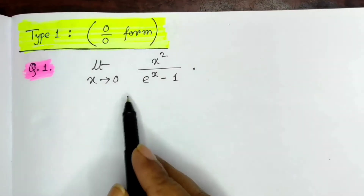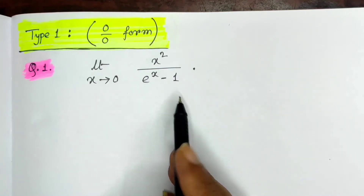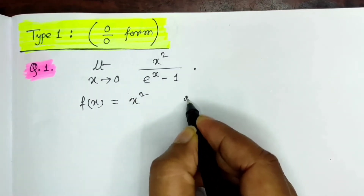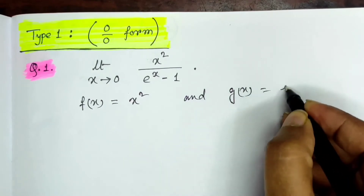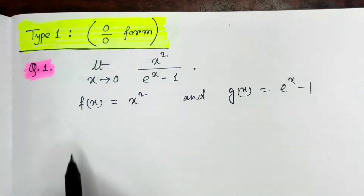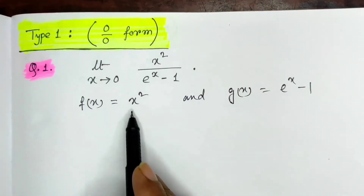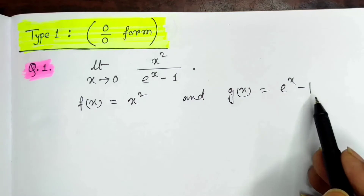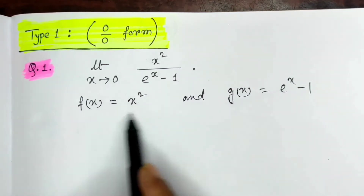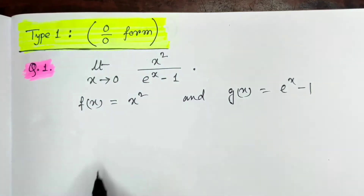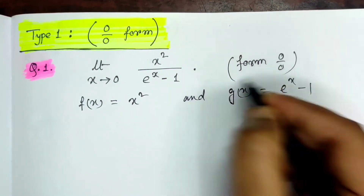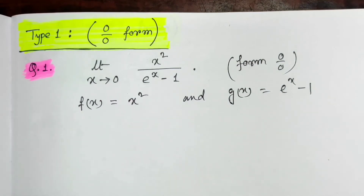In the first example, the given limit is x² divided by e^x − 1. Let f(x) = x² and g(x) = e^x − 1. If we consider limit x tends to 0, then f(x) = 0. Similarly, e^0 = 1 and 1 − 1 = 0, so g(x) = 0 at x = 0. Therefore the given limit is in the form of 0 by 0, which is the indeterminate form.